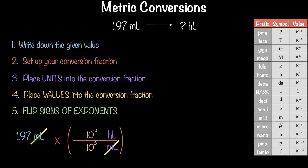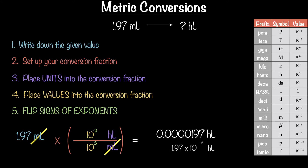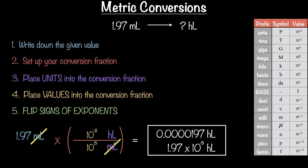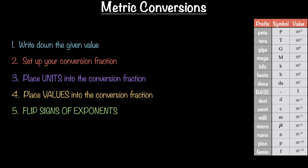Calculator time: plug in 1.9 times 10 raised to the negative 2, divided by 10 raised to the positive 3. The result is 0.0000019 hectoliters, or 1.9 times 10 to the minus 5 hectoliters.